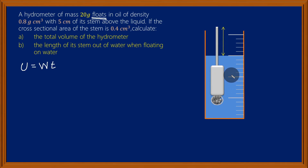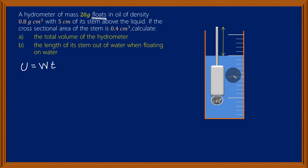Since it is floating, the only medium supporting it is the liquid — we don't have any string or somebody holding it on the other side. Then it is in equilibrium, and therefore the two forces balance out. The weight which acts downwards must be equal to the upthrust. This stems from the law of flotation. We can work out the weight of this hydrometer by multiplying its mass in kilograms by the value of the gravitational field strength.